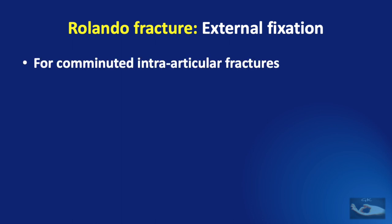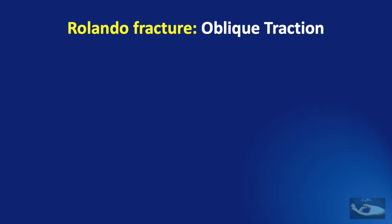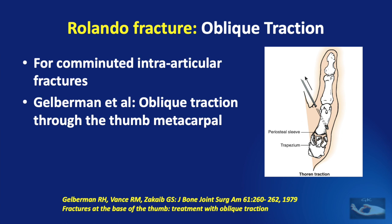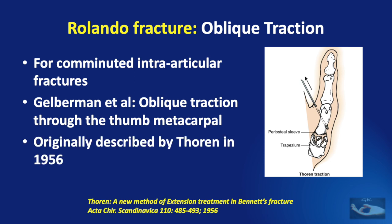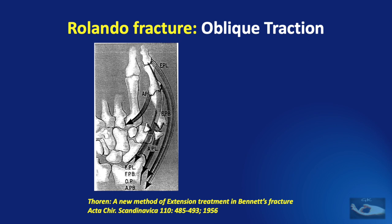External fixation is used for comminuted intra-articular fractures. Buschler et al. described a quadrilateral mini external fixation device placed between the thumb and the index metacarpal, followed by limited open reduction with K-wires or screws and a cancellous bone graft. The technique of oblique traction is also used for comminuted intra-articular fractures. Though it was analyzed by Gelberman et al., it was originally described by Thoren in 1956, who analyzed the different forces acting on this fracture and felt that oblique traction through the metacarpal was the answer to stabilize all these forces and achieve good fracture healing.